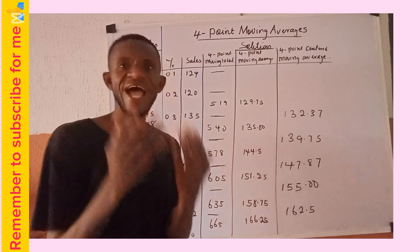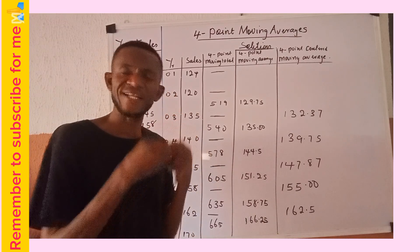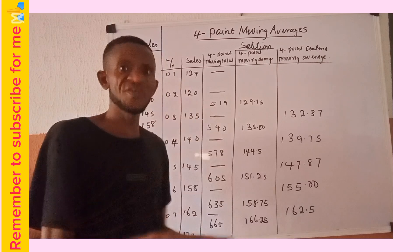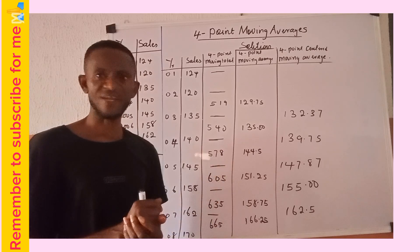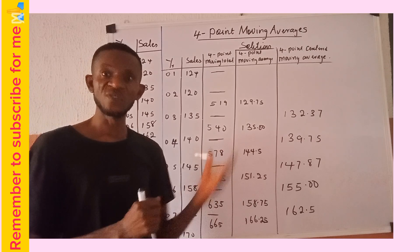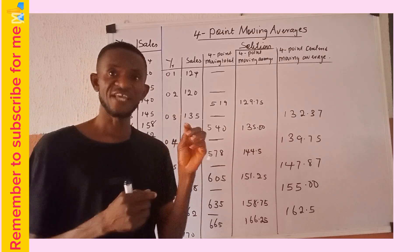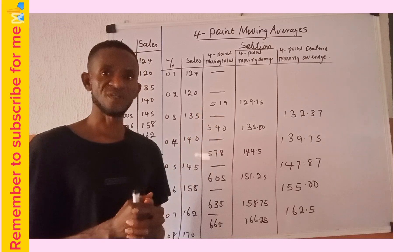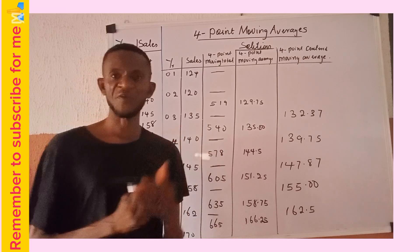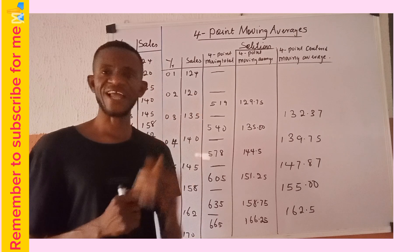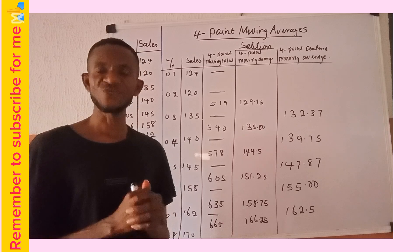So when a question asks you to compute four-point moving totals, four-point moving averages, and four-point centered moving averages, do exactly as demonstrated here and you should arrive at the correct answer. This is how to compute four-point moving averages with the intention of smoothing out the trend from the data points. In the next class, we will be discussing how to measure the trend using the least square method.